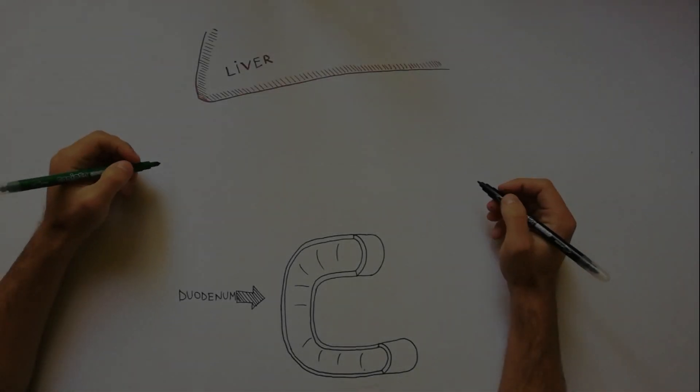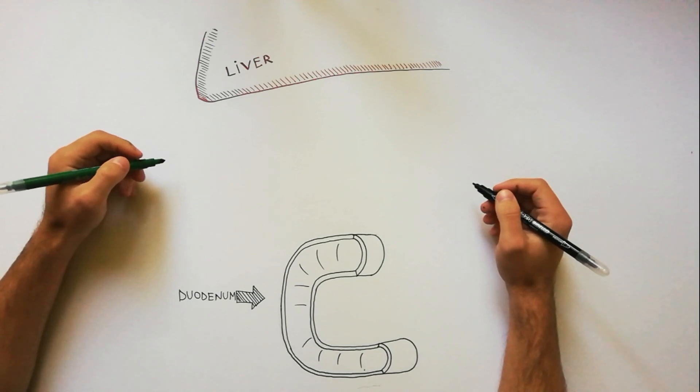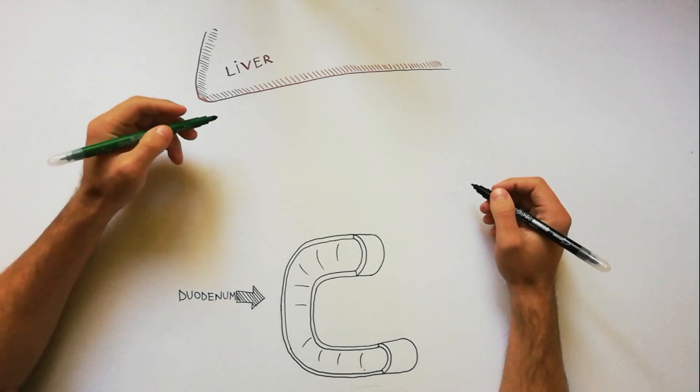The extrahepatic biliary apparatus receives the bile from liver, stores and concentrates it in the gallbladder and transmits it to the second part of the duodenum when required.